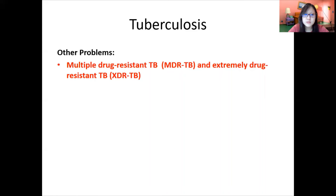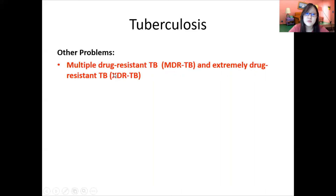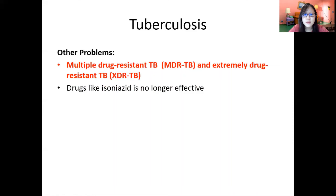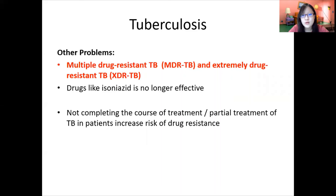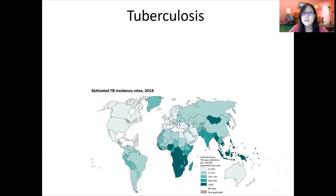Despite the excellent vaccine and combination therapy, there are other problems. When patients do not complete their drugs on time, or do not complete their course of medicine at all, multiple drug-resistant TB (MDR-TB) or extremely drug-resistant TB (XDR-TB) can form, making TB harder to cure. Drugs like isoniazid, which is an antibiotic, are no longer effective in such cases.